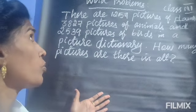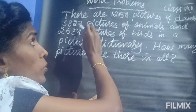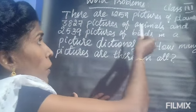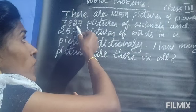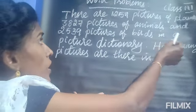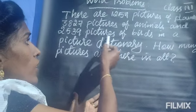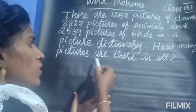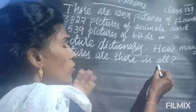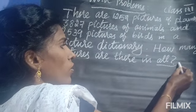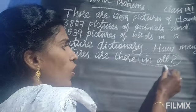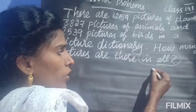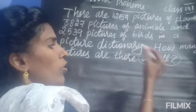Next, we are going to learn about word problems. Here the word problem says: there are 1259 pictures of plants, 3827 pictures of animals, and 2539 pictures of birds in a picture dictionary. How many pictures are there in all? Look at the keyword "all" — whenever you see "in all," you have to add.